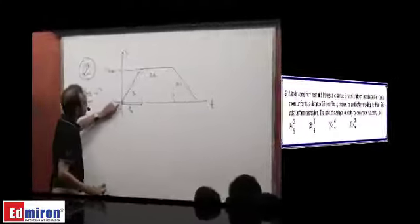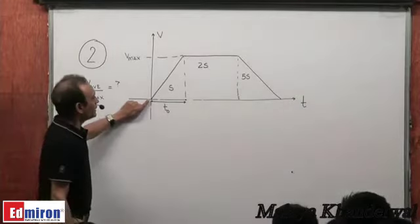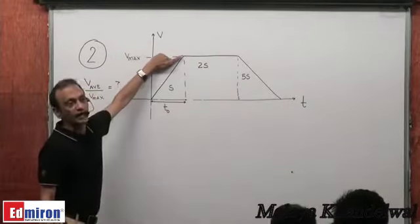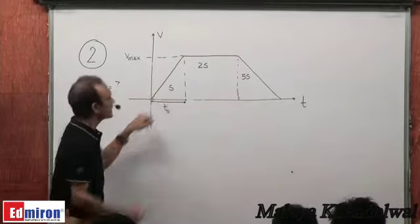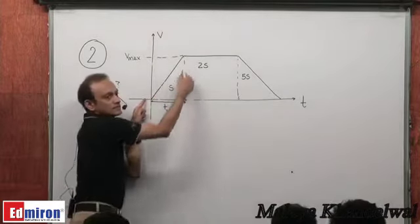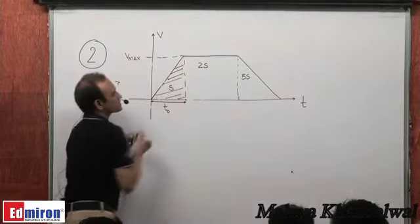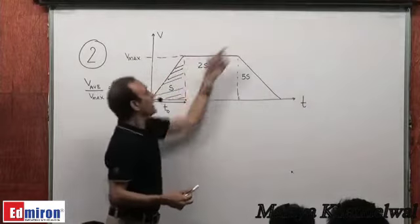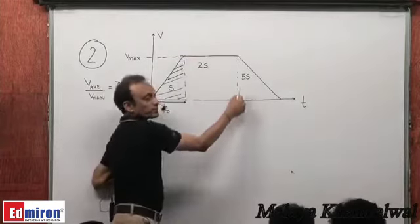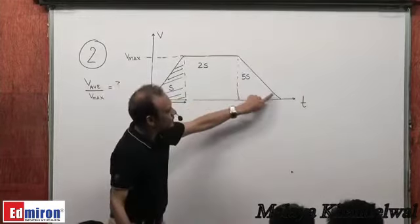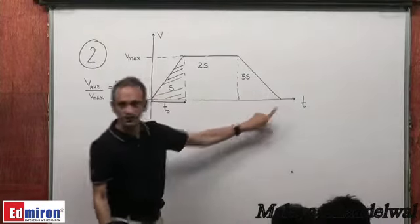The next situation is about a particle starting from rest with uniform acceleration, reaching a maximum velocity with displacement S in time T0 — meaning the area of this triangle is S. It then moves with uniform velocity and undergoes displacement 2S — area of this rectangle is 2S — and then undergoes uniform retardation with displacement 5S until it comes to rest.